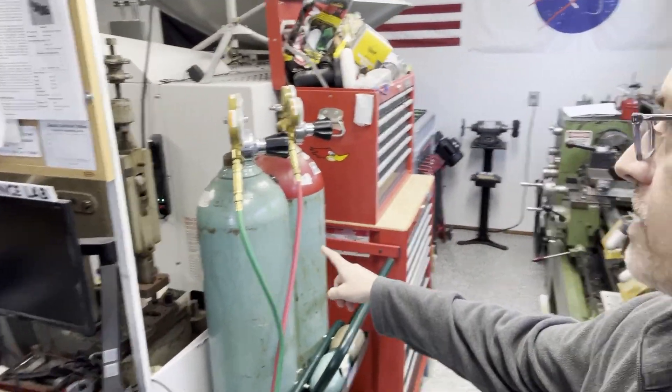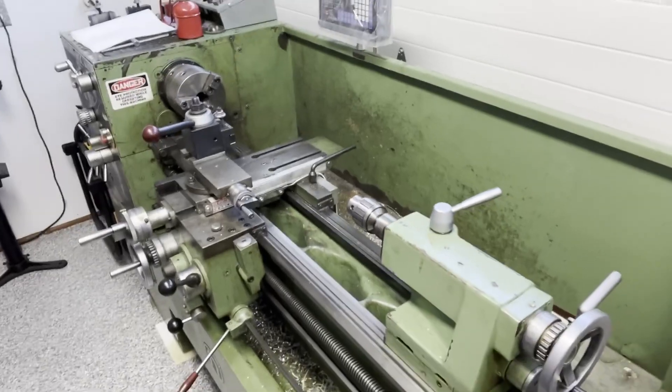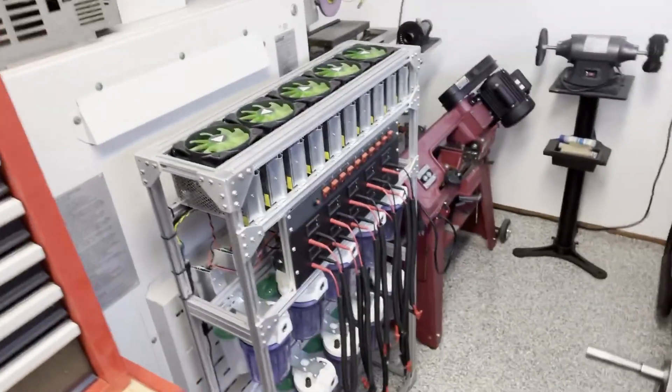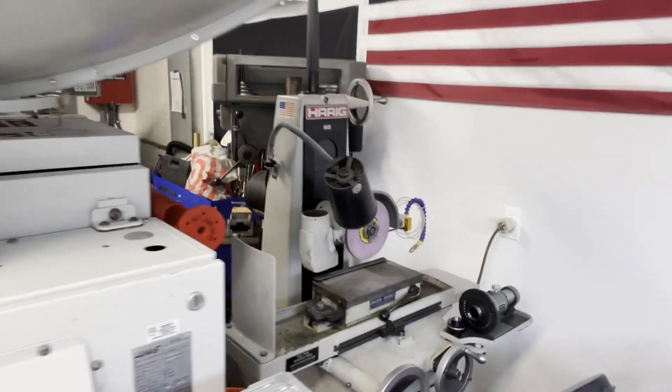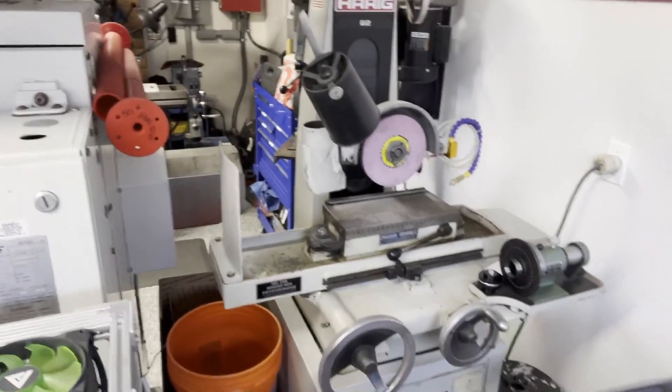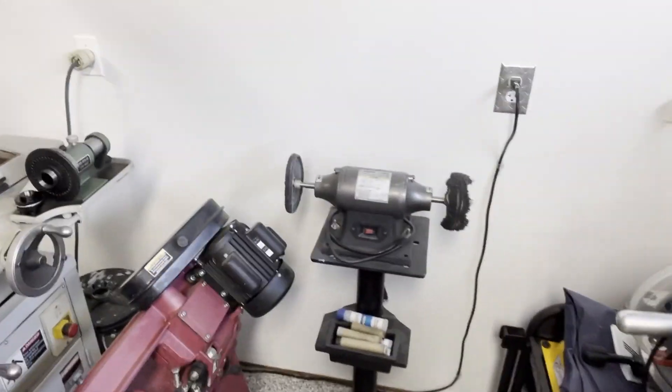Over here I have gas. This is my Nardini lathe. Here is another electrolysis unit. Then I also have a Harig surface grinder, basic chop saw, some polishing.